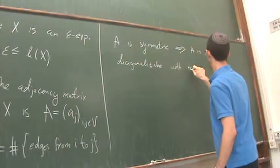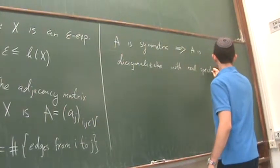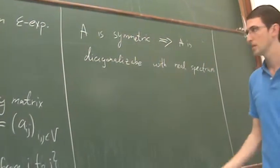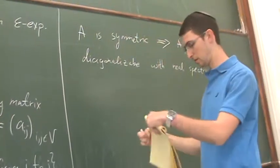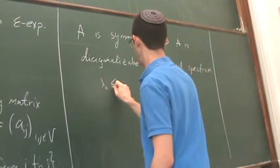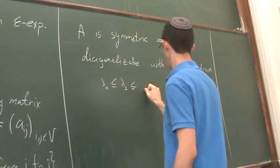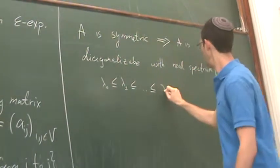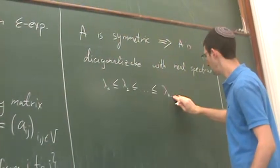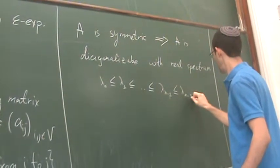A is diagonalizable with real spectrum. Let me denote the eigenvalues as λ_0 ≤ λ_1 ≤ ... ≤ λ_{n-2} ≤ λ_{n-1}.